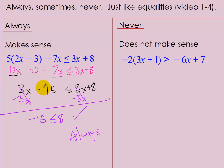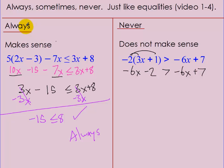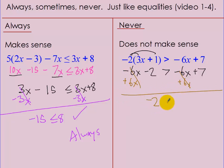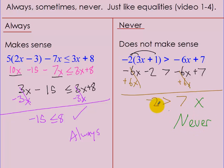Now let's look at the other side. Distributing the negative 2 gives negative 6x minus 2 is greater than negative 6x plus 7. Add 6x to both sides — the 6x's cancel. I get negative 2 is greater than 7. Is negative 2 greater than positive 7? No, that doesn't happen. So this is never.